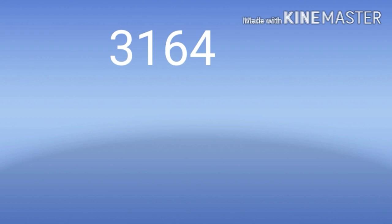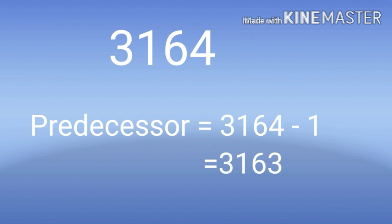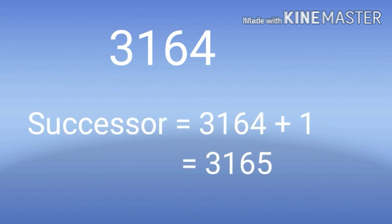For example, 3164. Predecessor of this number is equal to 3164 minus 1, so we get 3163. Next we can find out the successor of this number. To get successor, you can add 1 to this number. So 3164 plus 1 is equal to 3165.